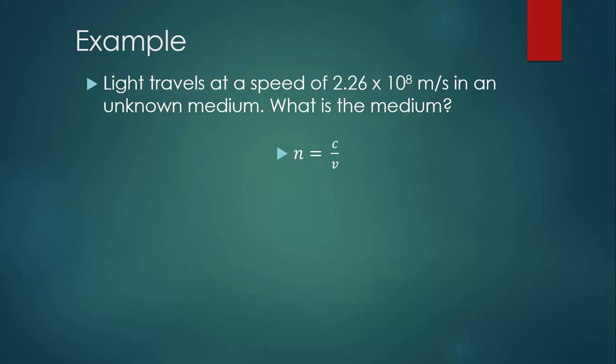We can start once again with the equation N equals C over V, and we know that light always travels 3 times 10 to the 8 meters per second in vacuum, and in this material, it happens to be traveling 2.26 times 10 to the 8 meters per second. This gives us an index of refraction of 1.33.